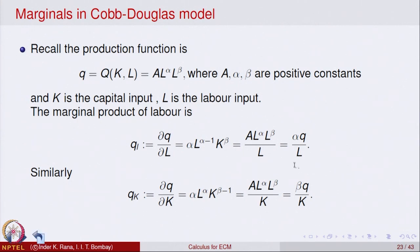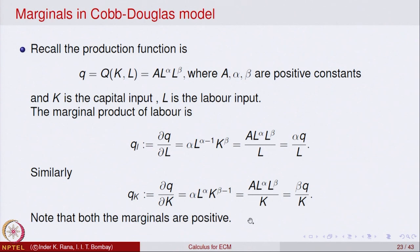Let us see an interpretation of this. Both marginals are positive because α is a positive constant, Q is positive, L is positive, and β is positive. So the marginals of Q are both positive, which indicates that the function is going to be increasing.